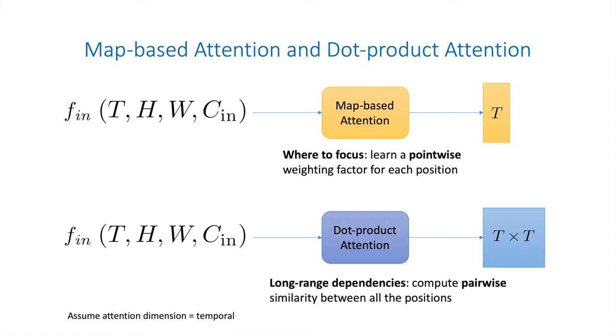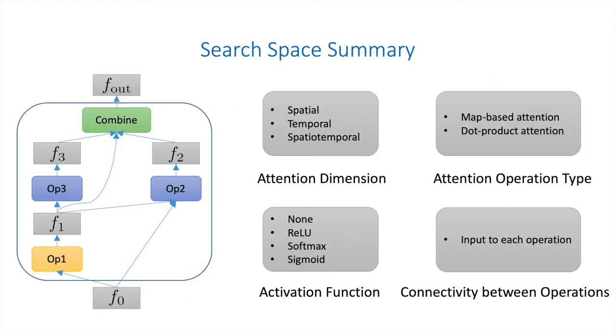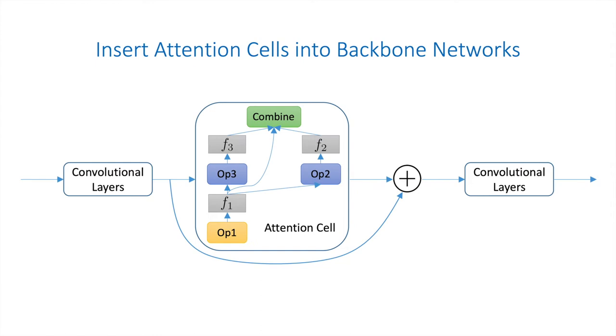We have a detailed description of the two types of operations in our paper. Here is the summary of our search space. For each attention operation, we need to determine its attention dimension and operation type. We also included the activation function for computing attention weights in the operation-level search space. Besides instantiating each operation, we need to determine the connectivity between the operations. Once we find our attention cells, we insert them into existing backbone networks. Since the input and output of cells have the same shape, we can easily insert them anywhere in the network. In practice, we usually insert multiple cells into the backbone and add a skip connection between the cell input and output.